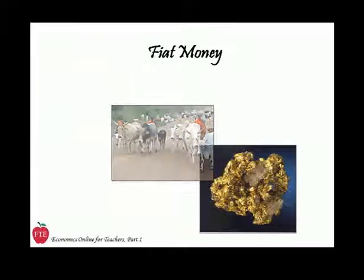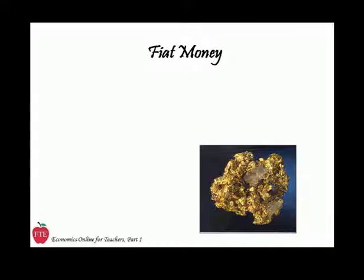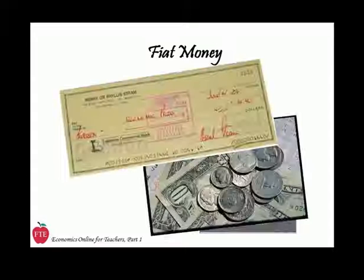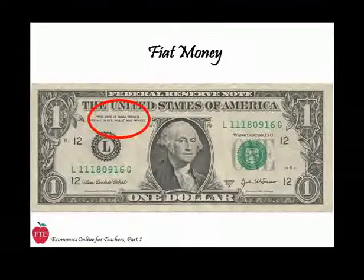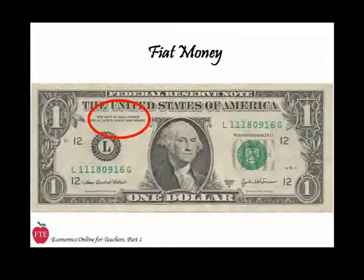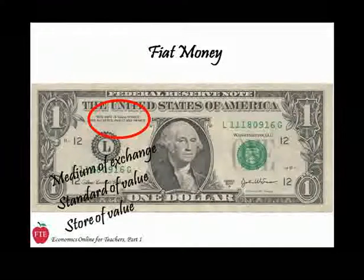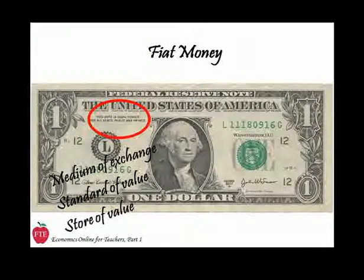Most civilizations moved beyond cows and salt a long time ago, but many people don't realize that we've even moved beyond gold. With minor exceptions, commodity money is a thing of the past, and today we use fiat money. The source of value for our currency and checks isn't the commodity — the paper. The value is established by fiat, or decree of the government. Our money has value because the government has decreed that it's money and will be accepted not only by the department store, the barista, and the cable guy, but also by Uncle Sam in payment of your taxes. Fiat money, like commodity money, must perform all three functions — a medium of exchange, a standard of value, and a store of value — in order to be viable.